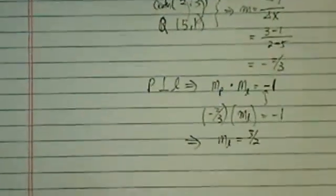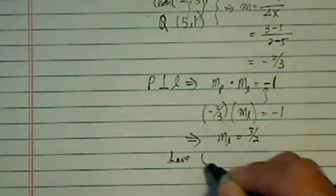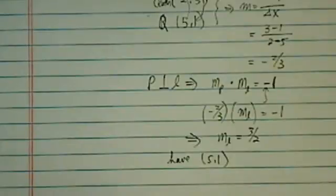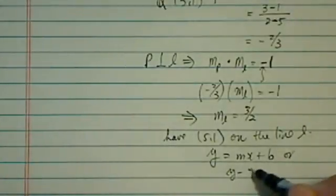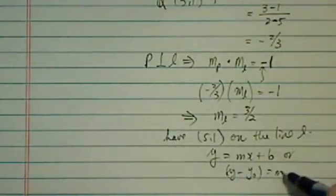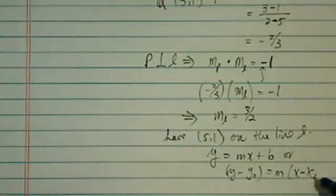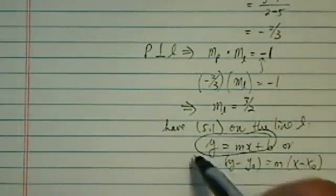So here's the slope, and we have a point 5, 1 on the line L that we're looking for. So from here we can use y equals mx plus b, or if you want, you can copy that little formula. I personally don't like students using formulas because chances are on the test you'll forget it, and then you're stuck.